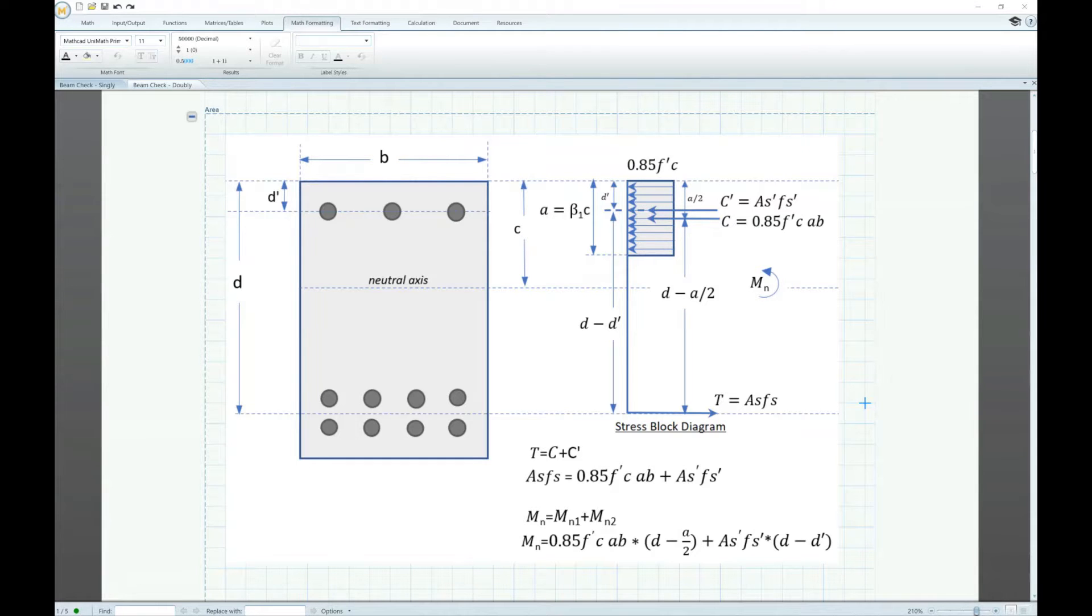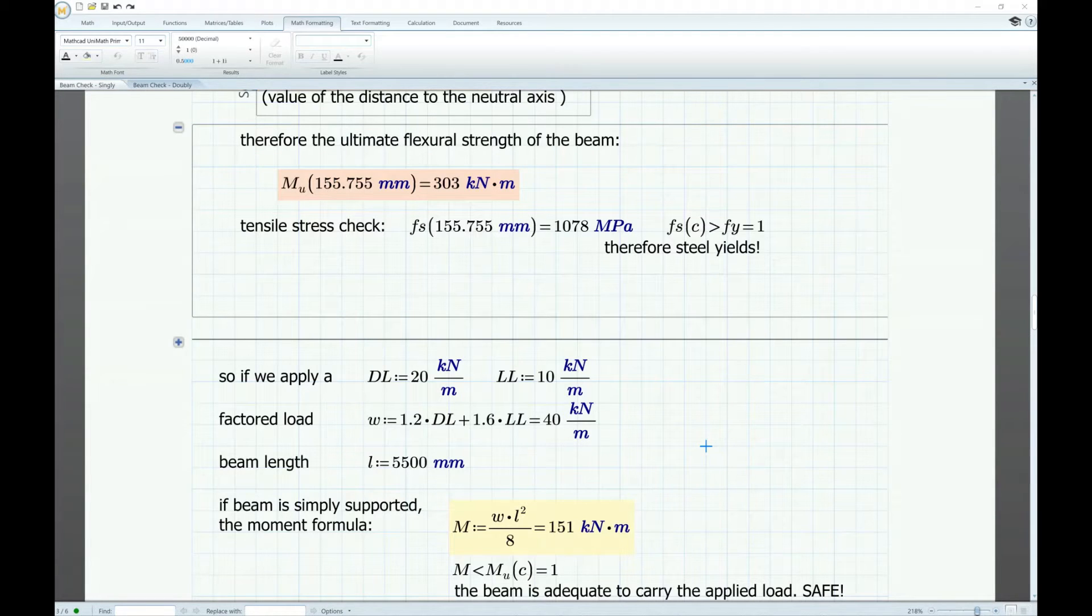Hey everyone, in the previous video we checked the capacity of the beam and verified if the beam is safe to carry a given load. But what happens if the load applied is greater than the beam capacity? Say, for example, we increase the dead load and the live load that gives us a 363 kilonewton meter applied moment which is greater than the moment capacity.